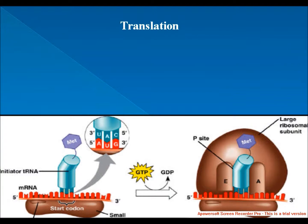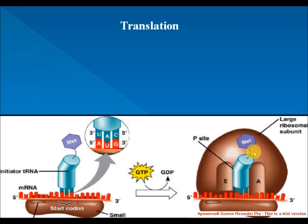When tRNA with an amino acid is attached at the P site, the 60S subunit helps facilitate peptide linkages with another amino acid, thereby helping to create proteins and contributing to protein synthesis.